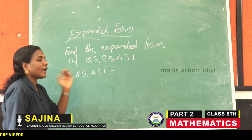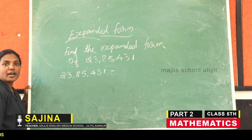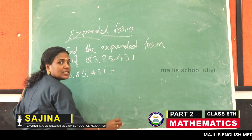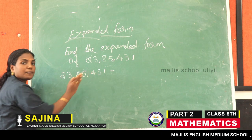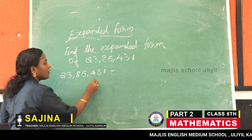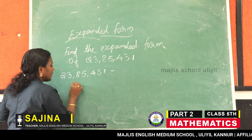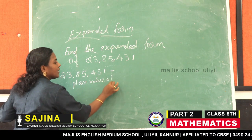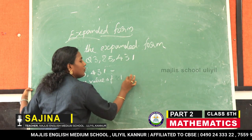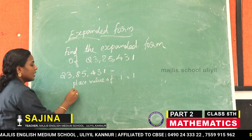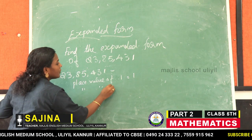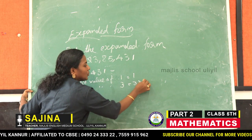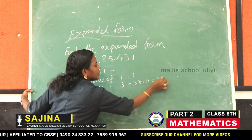Next, how to expand this number? What is the place value of one? One is in one's place. Therefore, place value of one is equal to one. Then what is the place value of three? Three is in ten's place. Therefore, three into ten is equal to thirty.